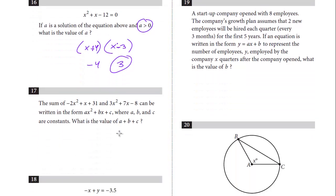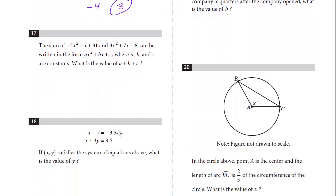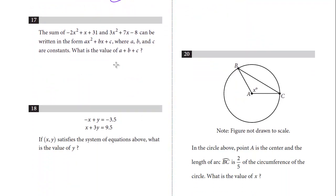Let's take a look at question 17. The sum of these two equations can be written in the form AX squared plus BX plus C, where A, B, and C are constants. What's the value of A plus B plus C? So this is just combining the polynomial like terms.